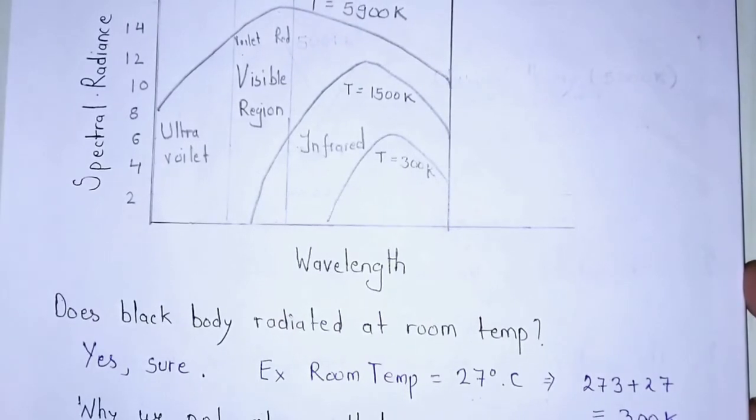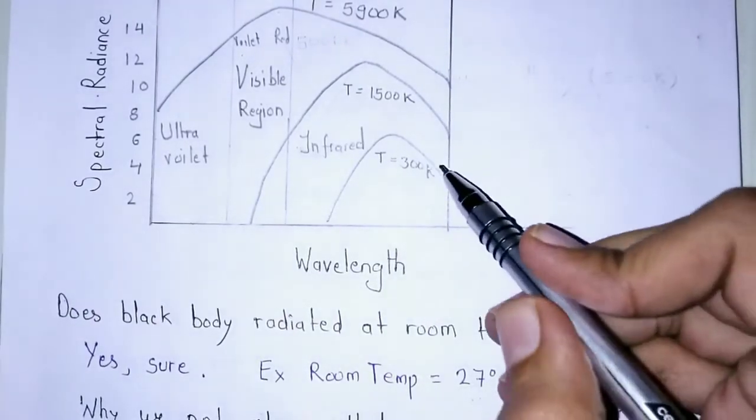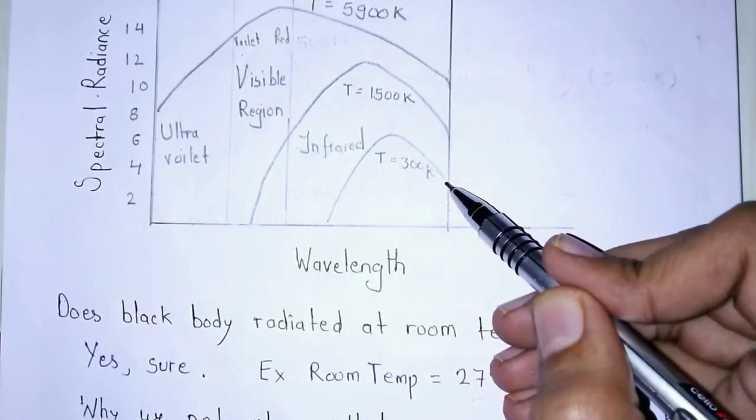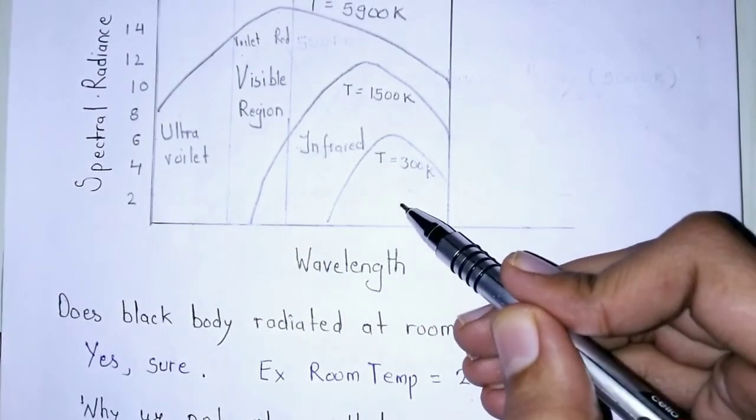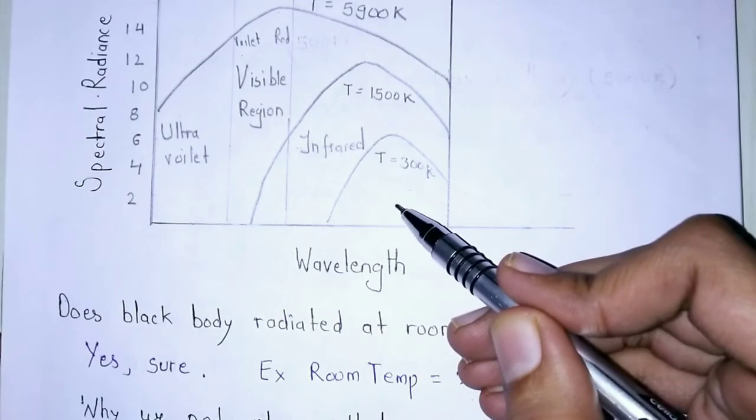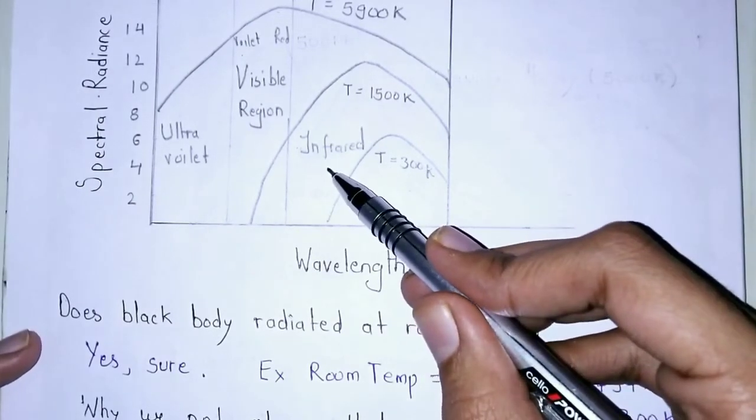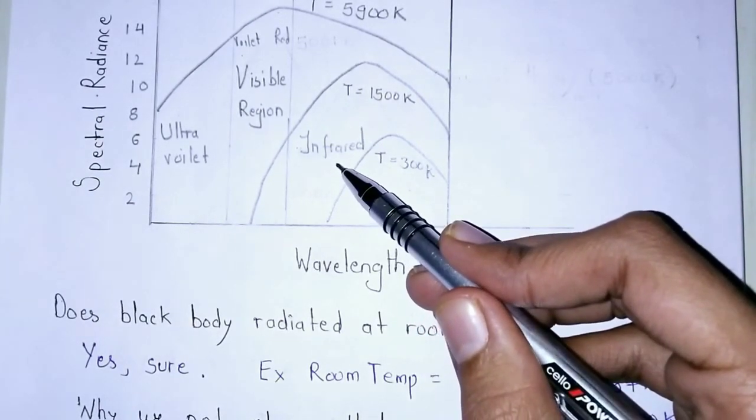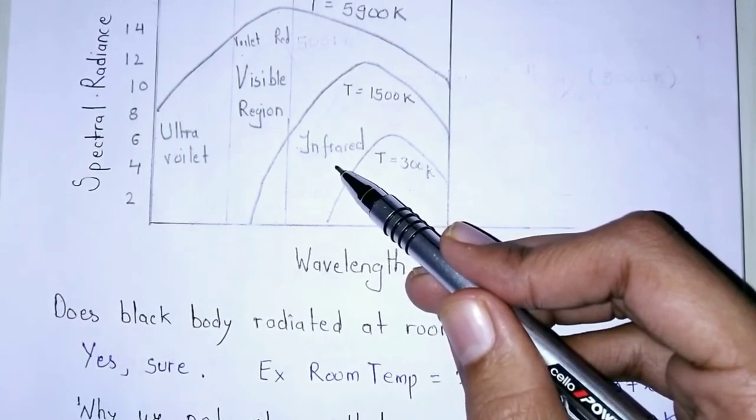It can be seen through the graph that at 300 Kelvin there is a curve showing there is radiation by a black body but it is of infrared region. That's why we cannot observe that by our naked eye.